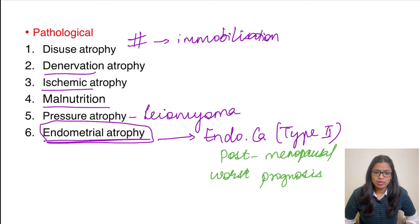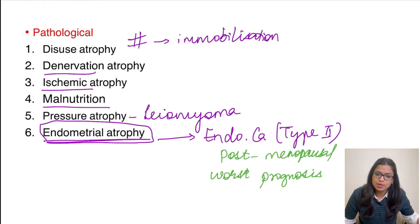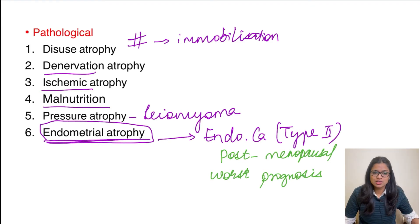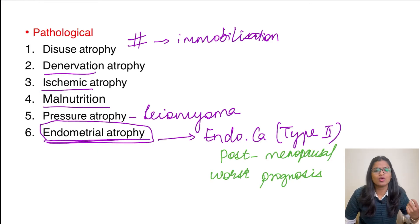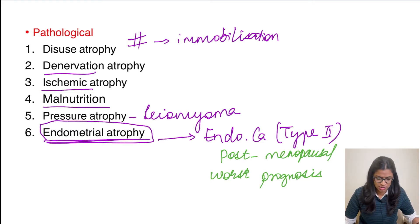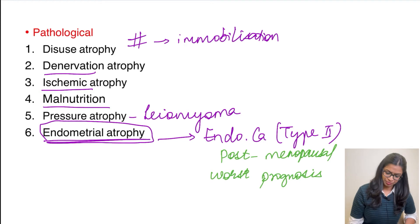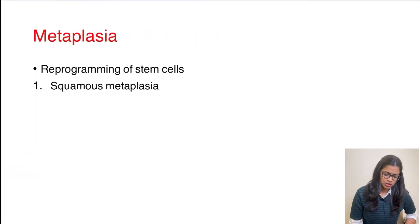To recap: endometrial hyperplasia leads to endometrial carcinoma type 1, occurring in premenopausal and perimenopausal age groups, while endometrial atrophy can also lead to endometrial carcinoma — this time type 2 — which has the worst prognosis.